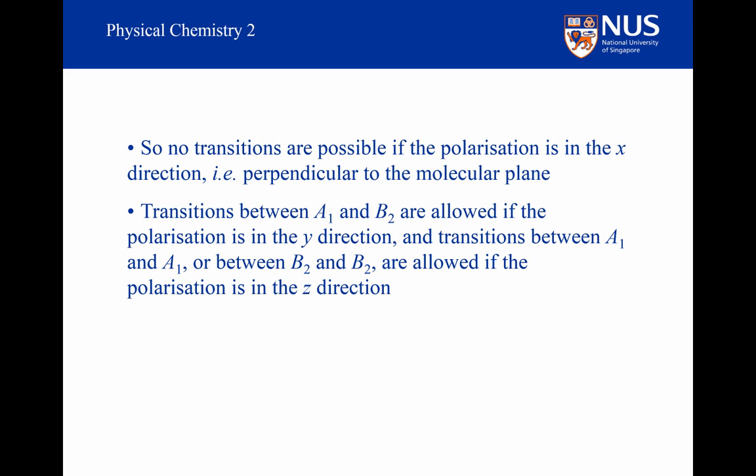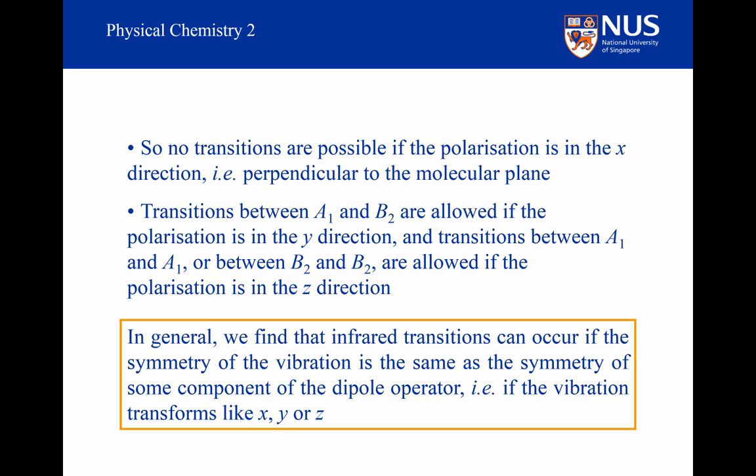The most important result is the following: in general, infrared transitions can occur if the symmetry of the vibration is the same as the symmetry of some component of the dipole operator — that is, if the vibration transforms like x, y, or z. This is the end of Part 9 of Topic 5. Please continue on to Part 10.